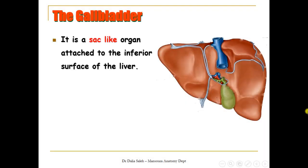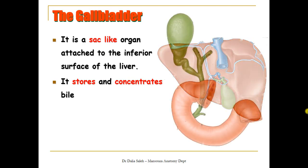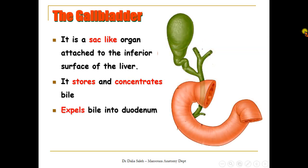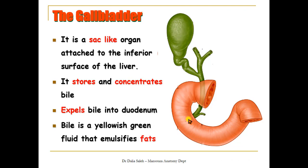The gallbladder is a sac-like organ attached to the inferior surface of the liver. It stores and concentrates bile, then expels this concentrated bile through its duct into the common bile duct, which opens into the duodenum. Bile is a yellowish-green fluid that emulsifies fats.